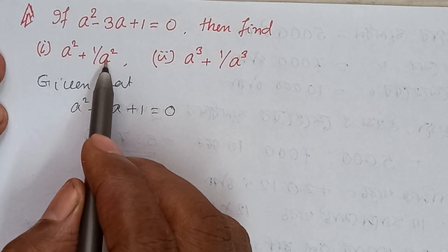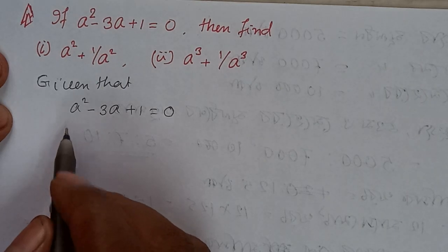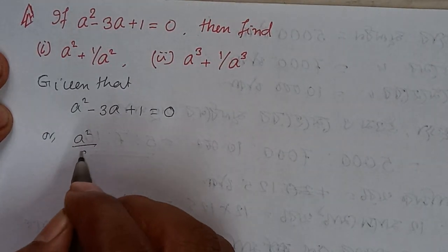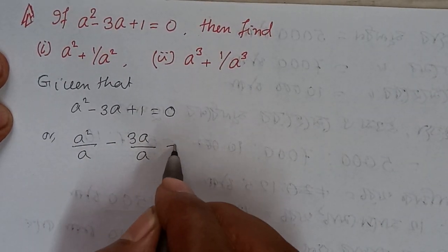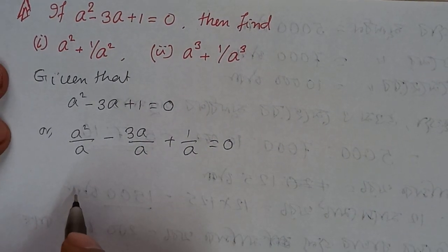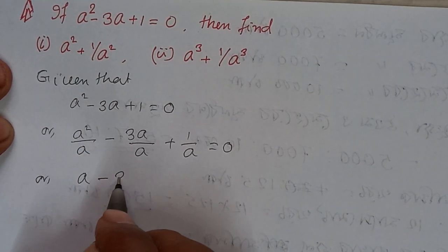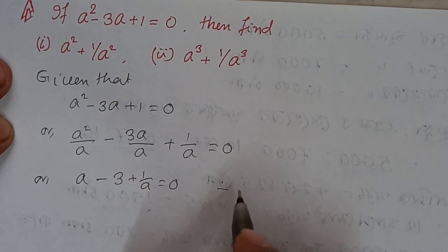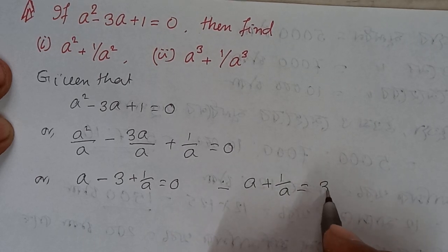Dividing the equation by a: a square by a minus 3a by a plus 1 by a is equal to 0, or a minus 3 plus 1 by a is equal to 0. Hence, a plus 1 by a is equal to 3.